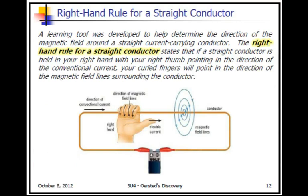There's a rule to determine what direction the field will go, and it's called the right-hand rule. Essentially, this rule is that if you place your thumb in the direction of the current flow, your fingers will curl in the direction of the magnetic field, that circular magnetic field.